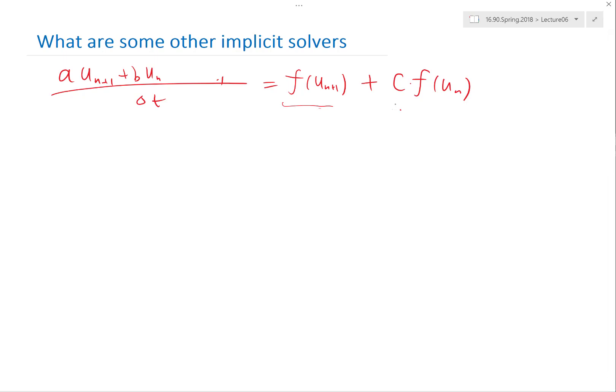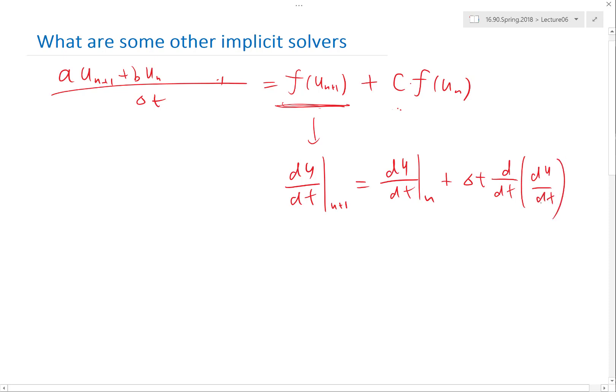So now how do we choose c? Then we have to do basically what you already did—now I have to expand this. How do I do that? This is du/dt at n+1, right? This is actually the Taylor series expansion: du/dt at n plus delta t times the derivative of this function, because du/dt itself is a function. So du/dt of du/dt is just the second order derivative, plus O(delta t squared) terms.